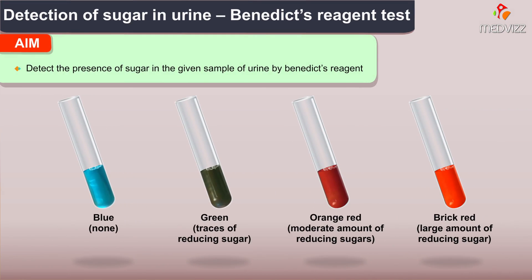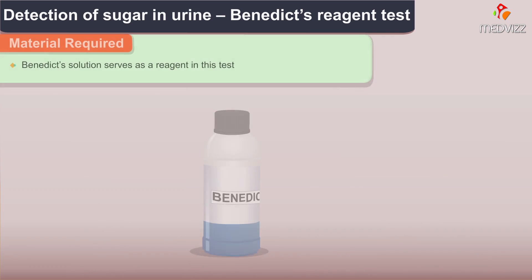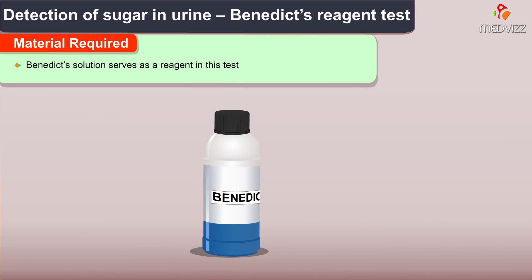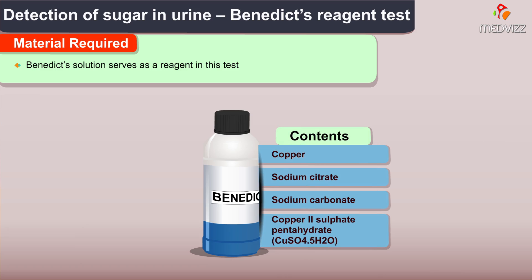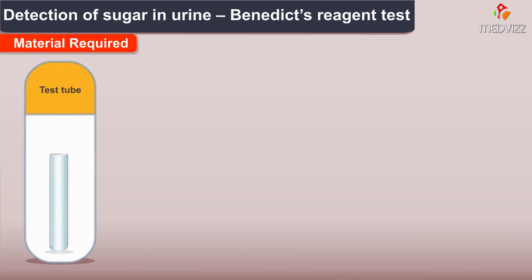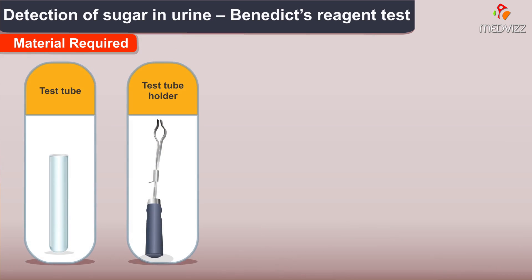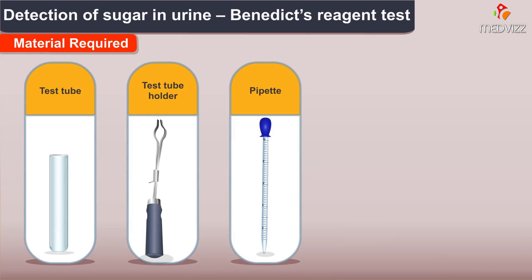The materials required will be a Benedict solution, which serves as a reagent in this test. The reagent is a blend of copper sodium citrate and sodium carbonate, along with copper(II) sulfate pentahydrate. Other test materials required would be a test tube, a test tube holder, a pipette, and a urine sample.